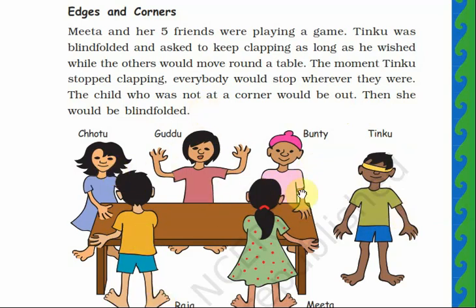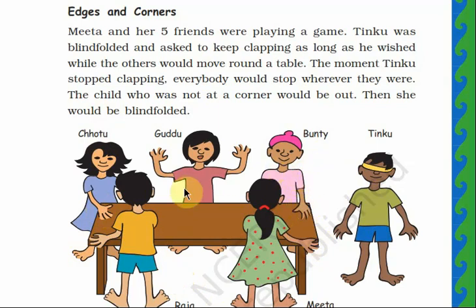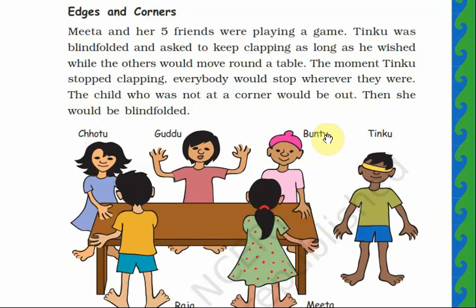The children were moving round the table while Tingu was clapping. Now Tingu stopped clapping and everybody is standing wherever they were. Mita is standing near the corner of the table. Raja is also near the corner. Chotu is also at the corner of the table, and Bandi is also at the corner of the table. But Guddu is not at the corner — he is at the center of the table.